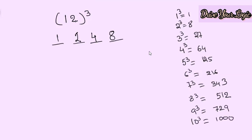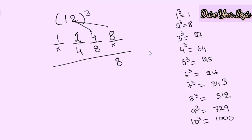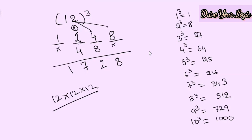From 11 onwards I will show you. Write down 1 and 2. Two square is 4, two cube is 8. Now for the center part — 2 double is 4, 4 double is 8. Then add: 8 plus 4 is 12, so write 2 and carry 1. That gives 4, 5, 6, 7. Your answer is 1728. It's very easy — you don't have to do 12 into 12 into 12.